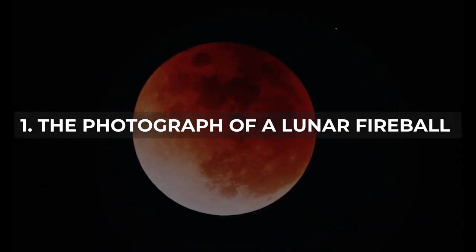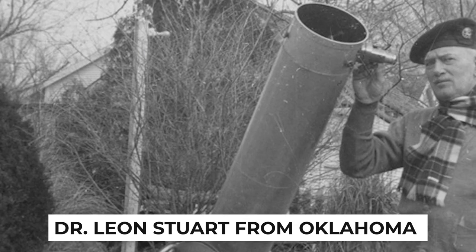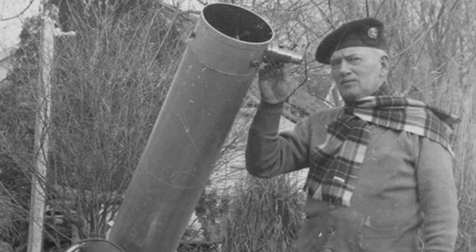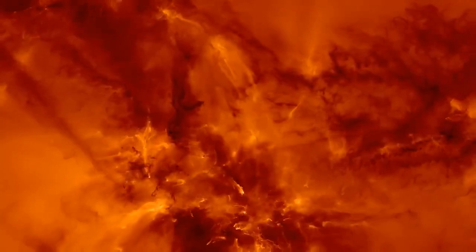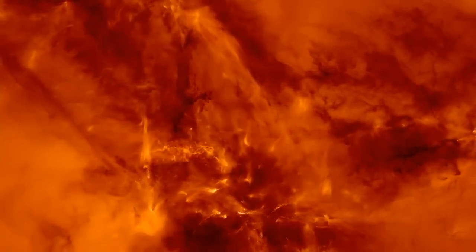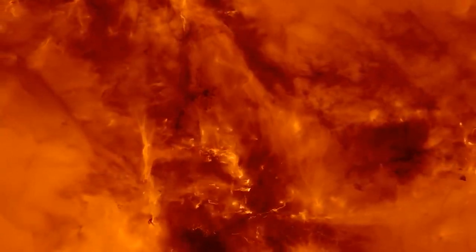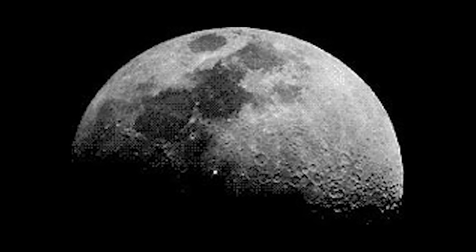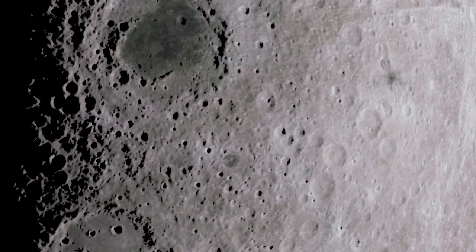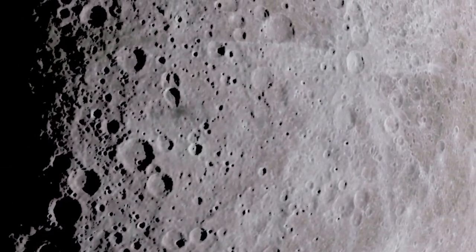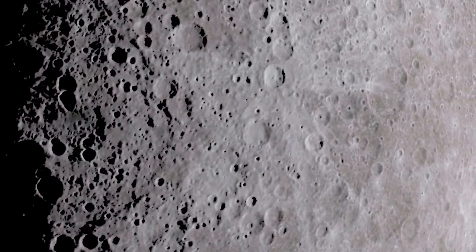Number 1: The Photograph of a Lunar Fireball. Dr. Leon Stewart from Oklahoma captured a lunar occurrence on camera in 1953. He thought the enormous explosion he had caught was a cloud of granite being annihilated. If accurate, he would be the first to observe and record a lunar impact. The incident came to be known as Stewart's Event, although neither astronauts nor spacecraft could locate the crater. Nevertheless, the image provided evidence that in 1953, something had occurred on the moon.